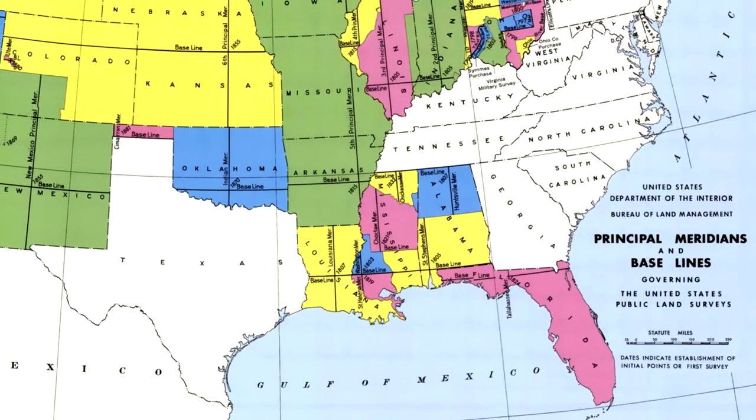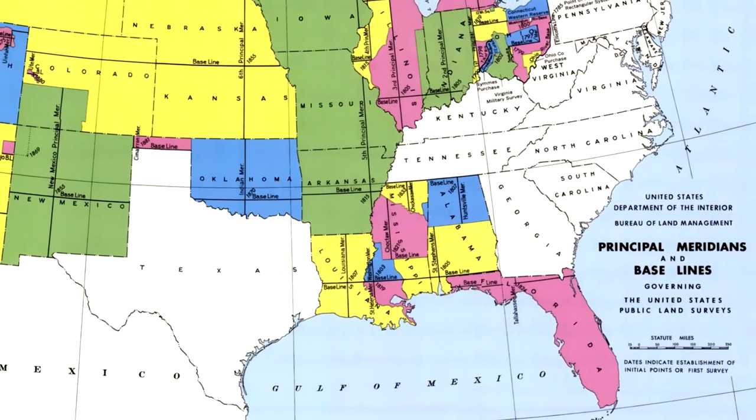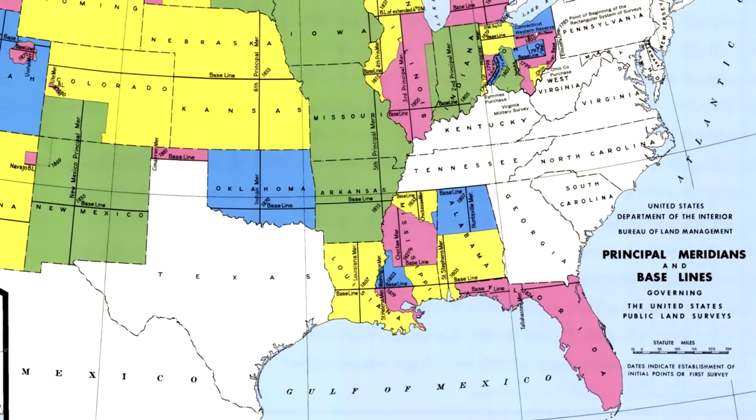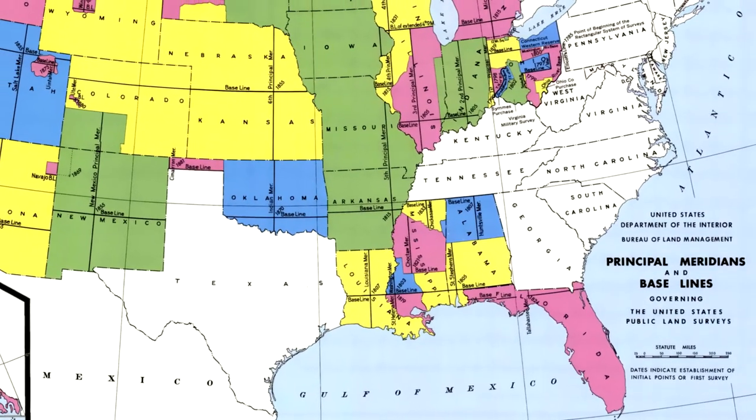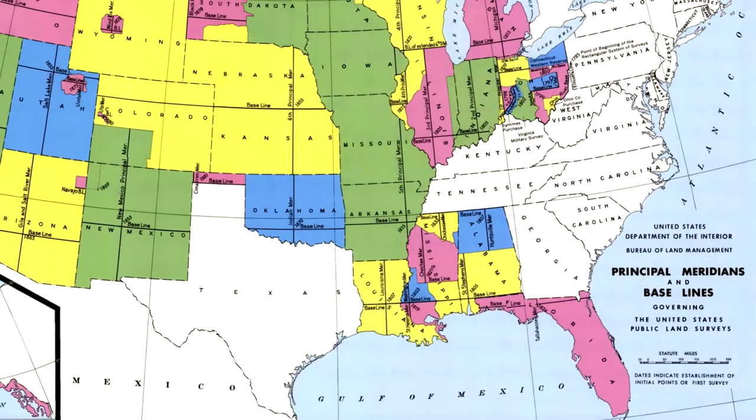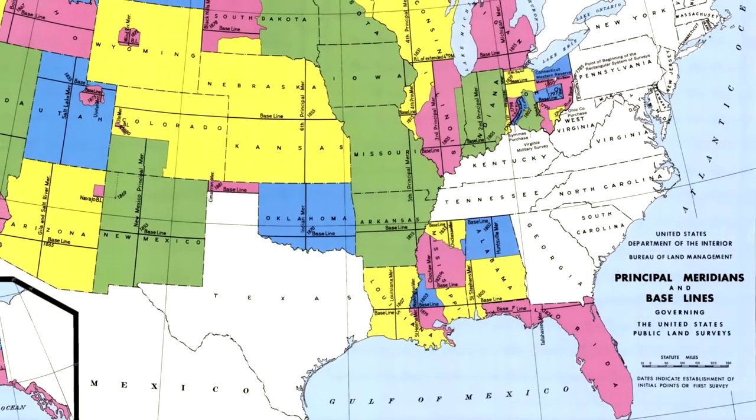The PLSS was first introduced in 1785 by the Land Ordinance following the Revolutionary War and was later refined in 1851. Since then, the system has seen few revisions and is now directed by the Bureau of Land Management.